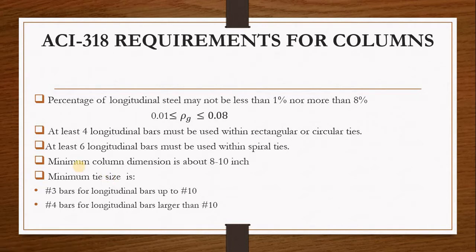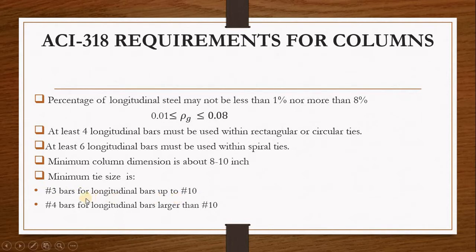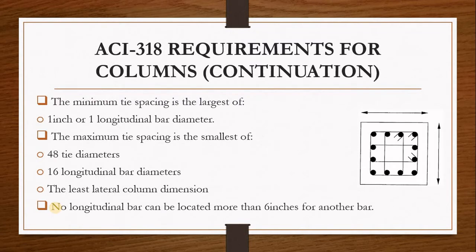ACI states that the minimum tie size for a square or rectangular column is either number 3 bars for longitudinal bars up to number 10 in diameter, or number 4 bars for longitudinal bars larger than number 10 in diameter.